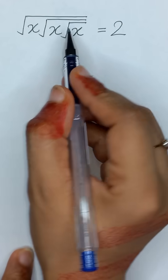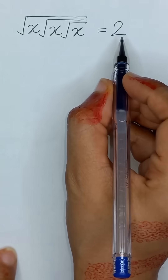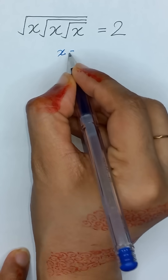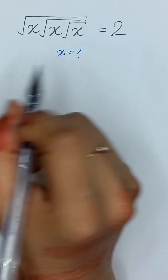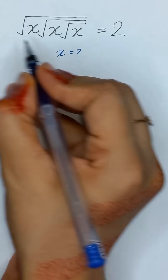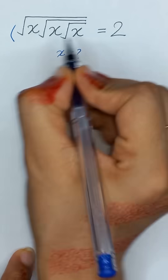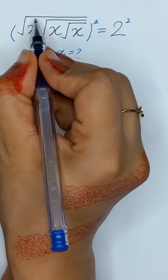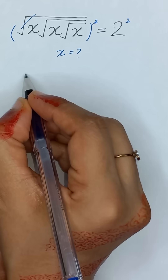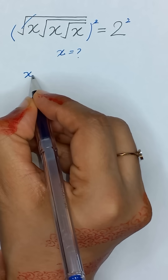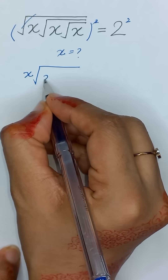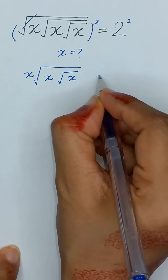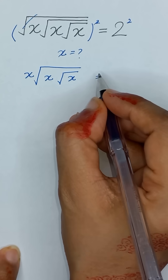The problem is: square root of x under square root of x under square root of x is equal to 2. What will be the value of x? First, we will remove this square root by applying square on both sides, so this square and square root will be cancelled out and it will become x times square root of x under square root of x, is equal to 2 squared.